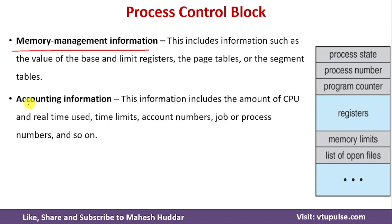The next component is accounting information — that is, how much time the process was executing on CPU, how much time it used various resources, and how much execution it has completed. All this information is stored in the accounting information field. These are the key components of the process control block, and they are essential because whenever a process moves from one state to another and resumes in a second iteration, we need to reload all this information to continue executing.